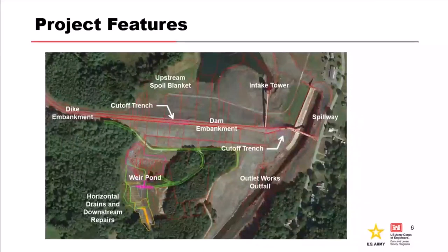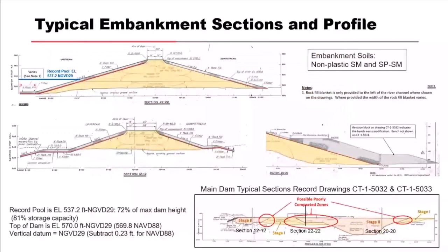Here's the layout of the dam — the main embankment. There was a cutoff trench installed during construction here, and another one during construction here. There was an upstream soil blanket also added during construction. Many New England dams, it's an earthen embankment. You can see the inclined riprap surfaces. We had some issues with compaction at some of these construction interfaces due to seasonal construction, which contributed to some of the risk-driving failure modes initially.